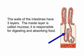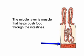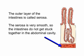The walls of the intestines have three layers. The inside layer is called mucosa — it is responsible for digesting and absorbing food. The middle layer is muscle that helps push food through the intestines. The outer layer of the intestines is called serosa. The serosa is very smooth, so the intestines do not get stuck together in the abdominal cavity.